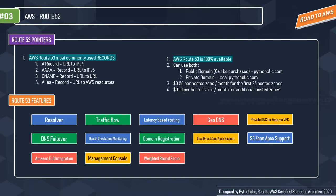After you create a hosted zone for your domain such as example.com, you create records to tell the DNS how you want traffic routed. For example, records can route internet traffic for pytholic.com to a host IP in your data center, route email for user@pytholic.com to a mail server like mail.pytholic.com, or route traffic for a subdomain like apps.products.pytholic.com to a different host's IP address.